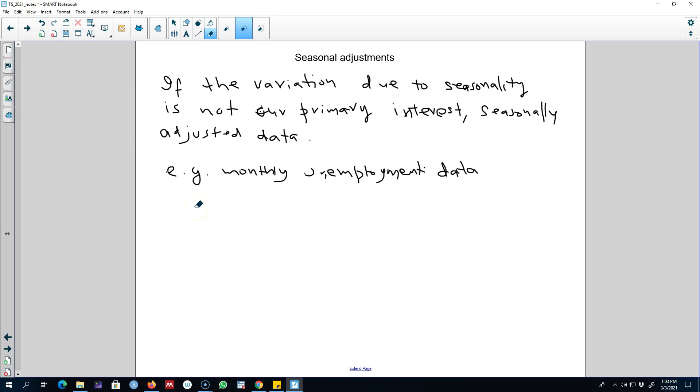One such example is the monthly unemployment data, for example unemployment in our town. We know that in winter, unemployment rate in this town is much larger than unemployment rate during the summer, when a lot of tourists travel to this town and there is more employment in this town.